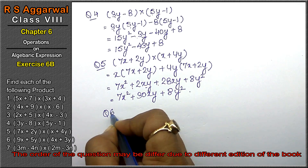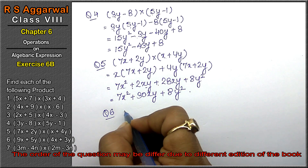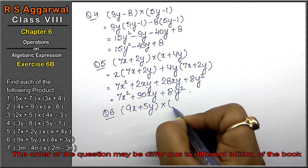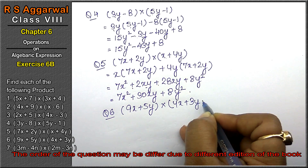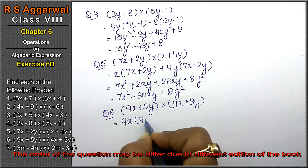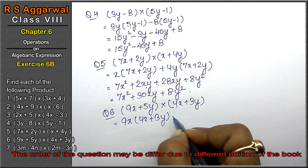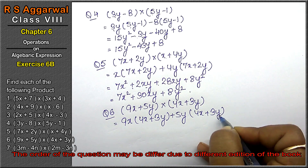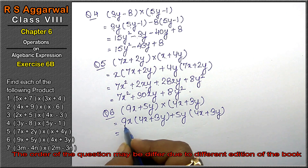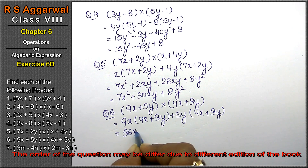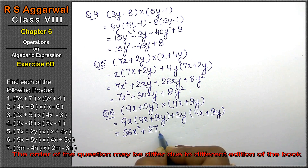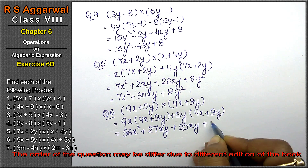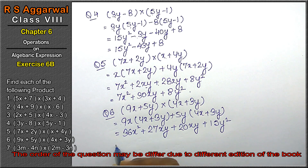Let's do question number six of Exercise 6B, that is algebraic expressions. Question number six is (9x + 5y) multiplied by (4x + 3y). So: 9x multiplied by (4x + 3y), plus 5y multiplied by (4x + 3y). Plus plus: 9 times 4 is 36x squared, plus 27xy, plus 20xy, plus 15y squared.